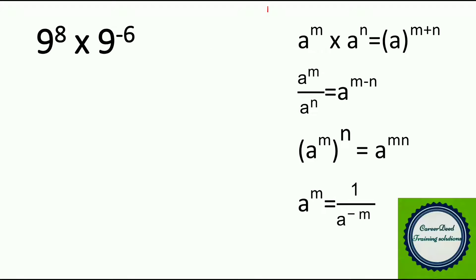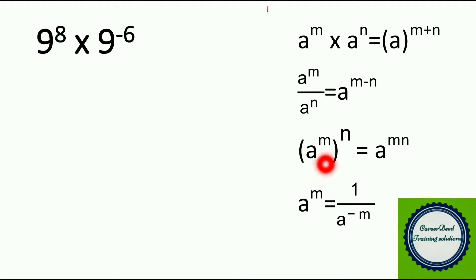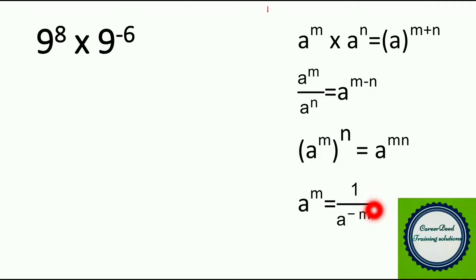You have 9^8 × 9^(−6). On the right-hand side, you are looking at 4 fundamental rules of indices: (1) a^m × a^n = a^(m+n); (2) a^m ÷ a^n = a^(m−n); (3) (a^m)^n = a^(mn); (4) a^m = 1 / a^(−m), or equivalently a^(−m) = 1 / a^m.